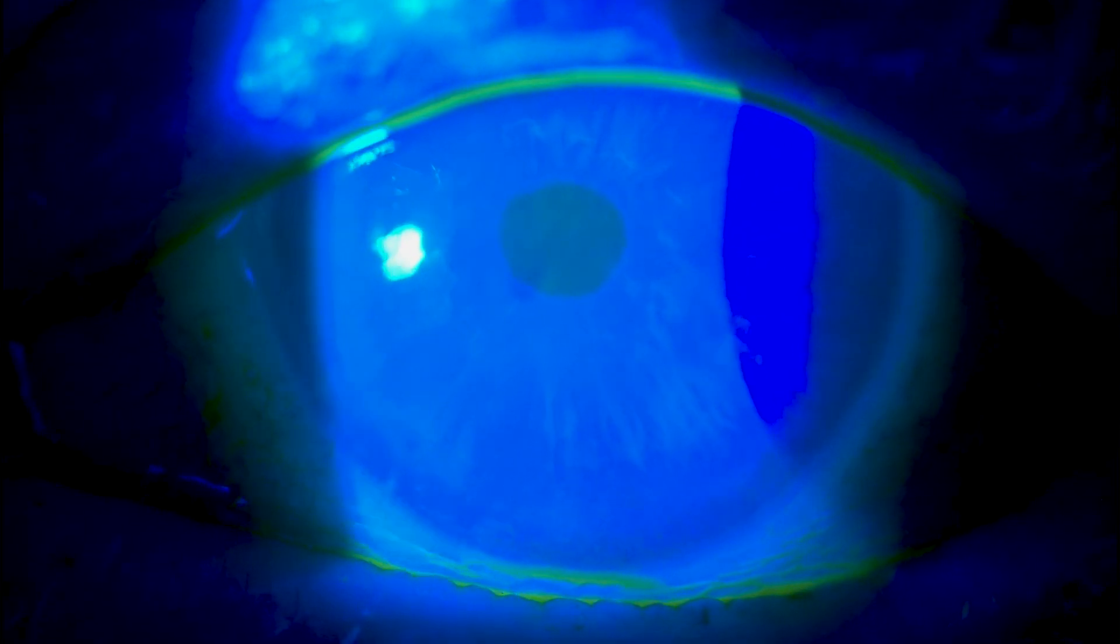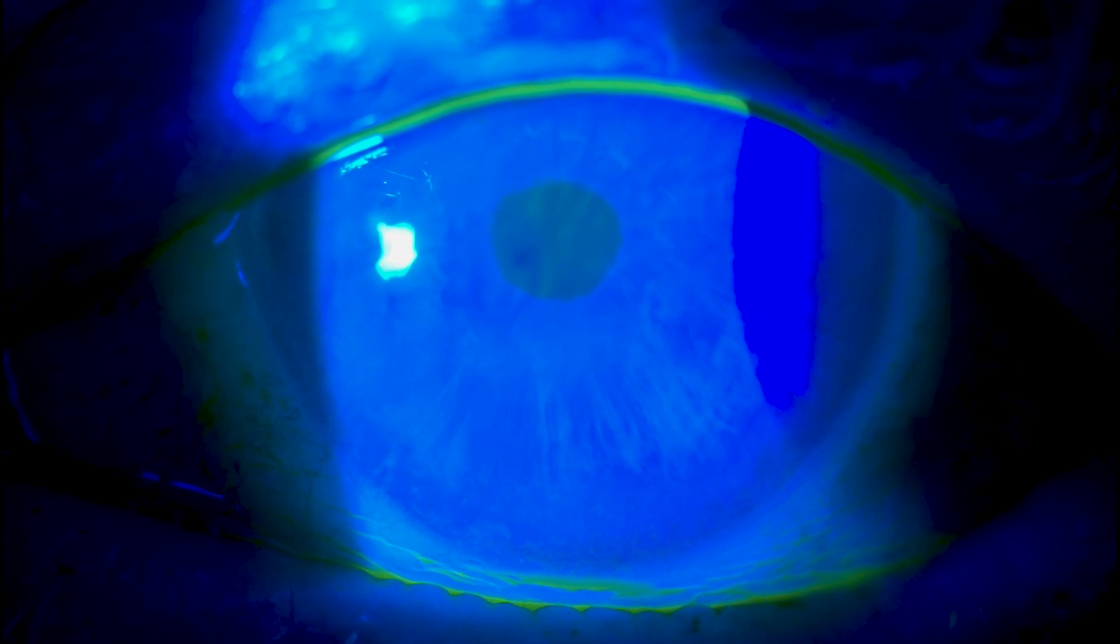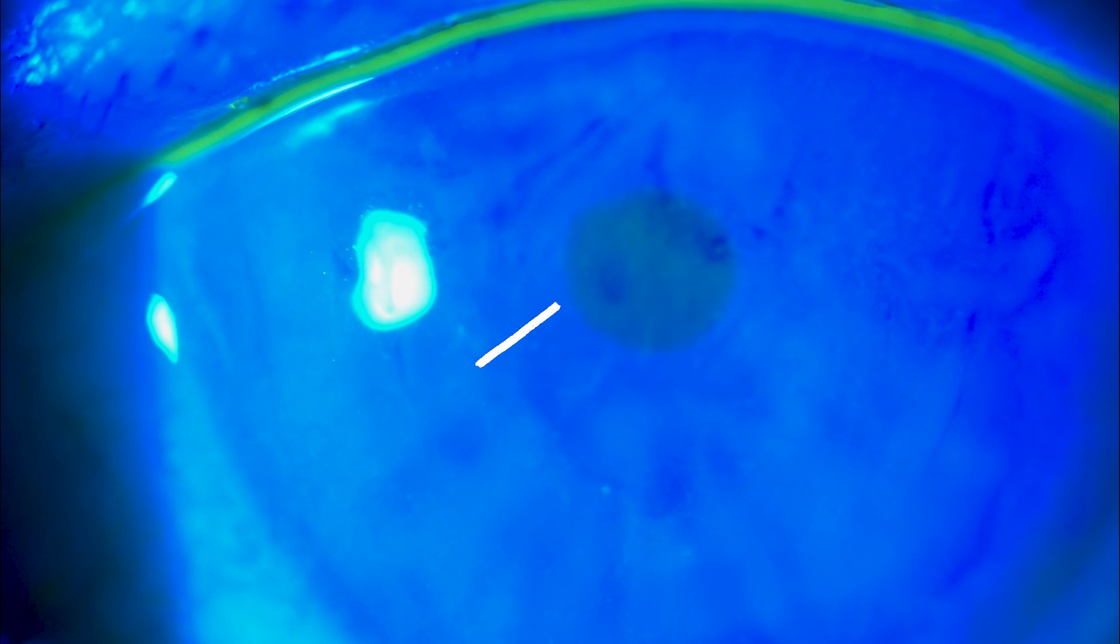And as you can see when she blinks, she has a nice yellow glow to her tear film, and it breaks apart. You'll see these almost black patches that form within the tear film.